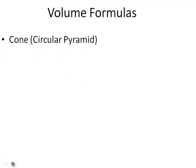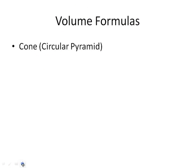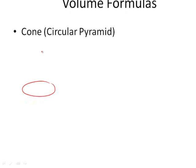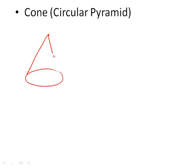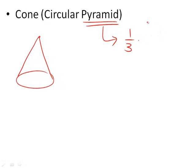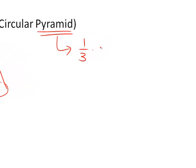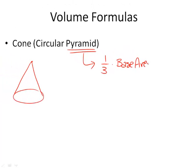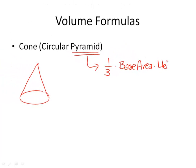Volume of a cone. A cone has a circular base but it goes to a point, making it a pyramid. If you remember, pyramids are always one third of the prismatic volume, which would be base area times height.